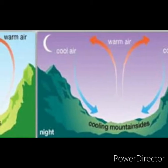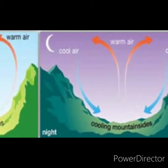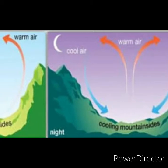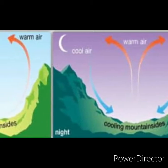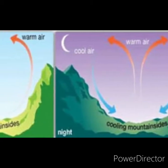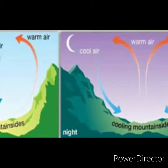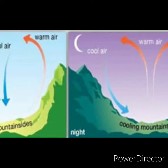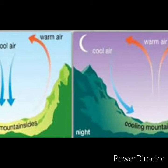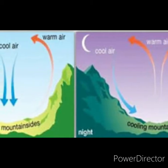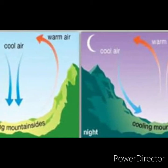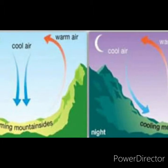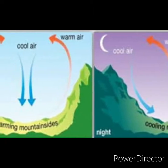Seasonal winds are those which change their direction according to the season in a year. Unlike planetary winds, which never change direction, seasonal winds change direction and are otherwise called monsoon winds.